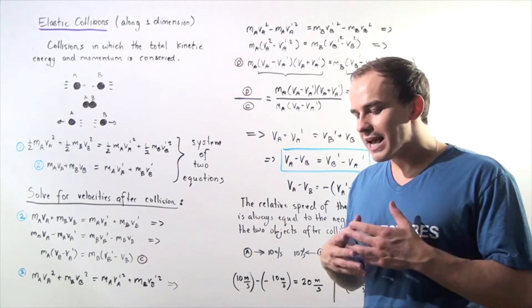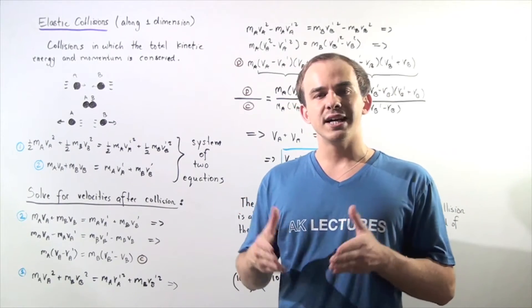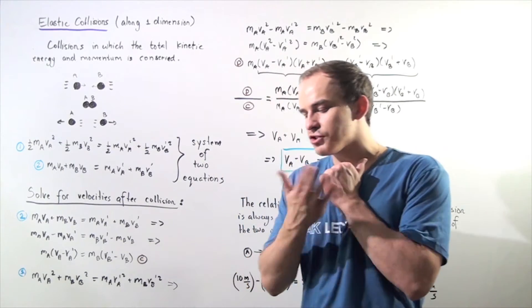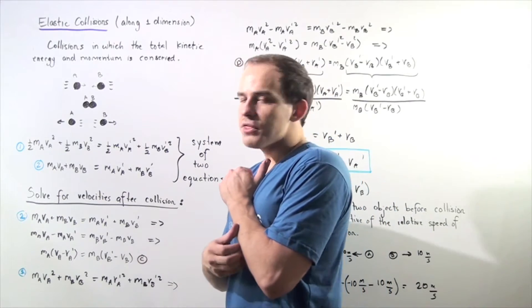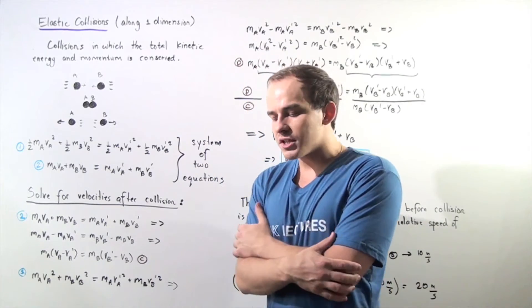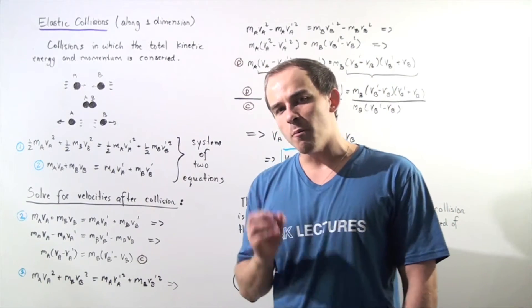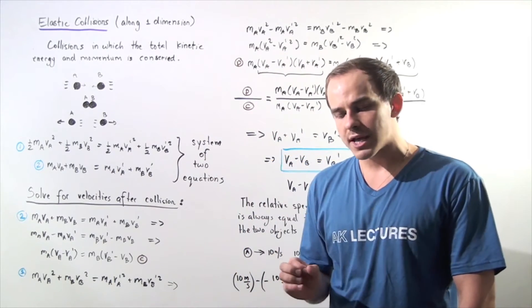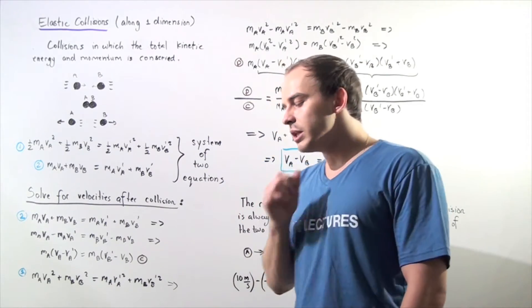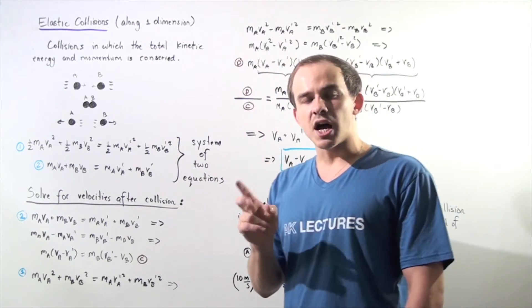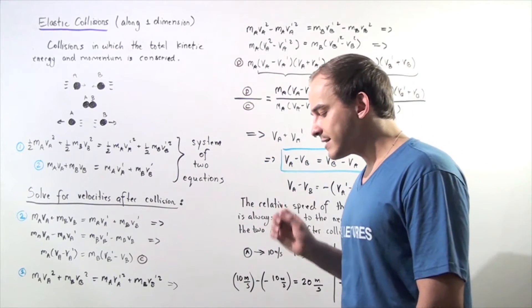Let's examine more closely elastic collisions that take place along one direction, along one dimension — let's suppose along the x-axis. Let's suppose we have two objects, object A and object B, that are traveling along the x-axis.